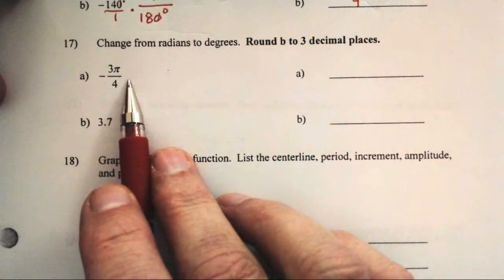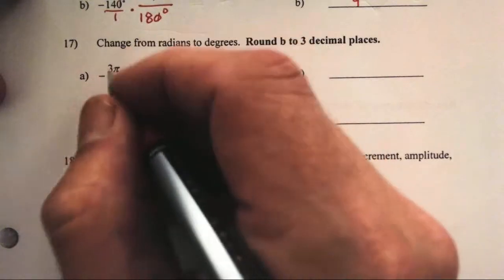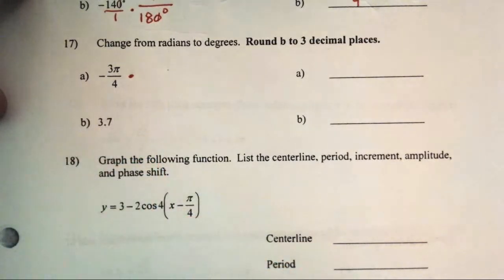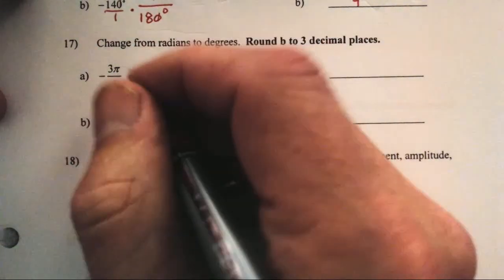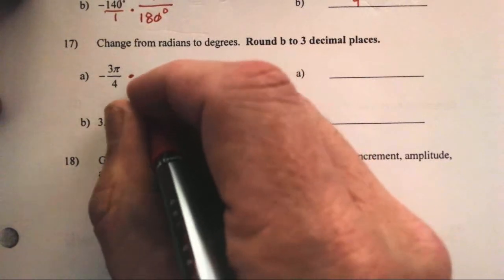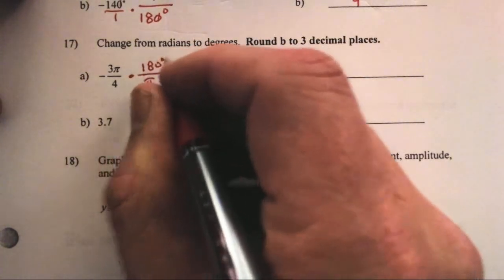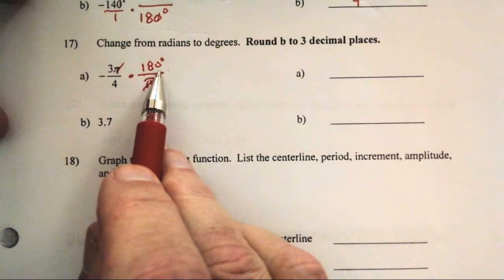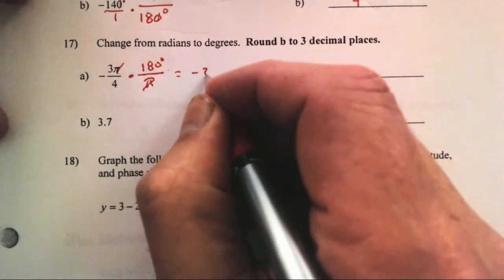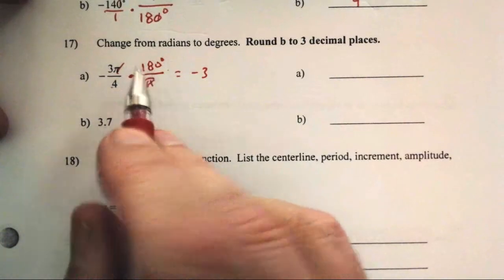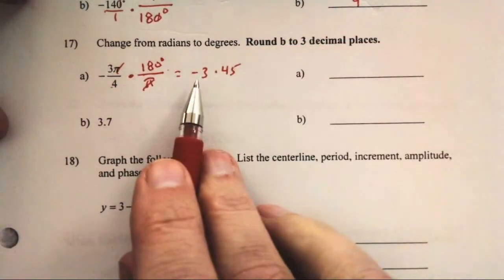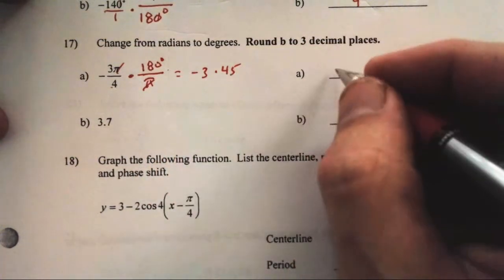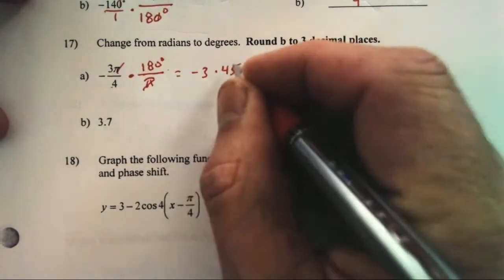I'm in radian measure and I want to cancel radians. You might already know that -3π/4 is -135 degrees, but we need to know the process for when we get to 3.7. To cancel radian measure, multiply by 180 degrees on pi — that's just one. The pi's cancel, and one-fourth of 180: half of 180 is 90, half again is 45.